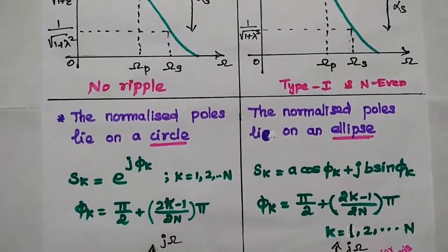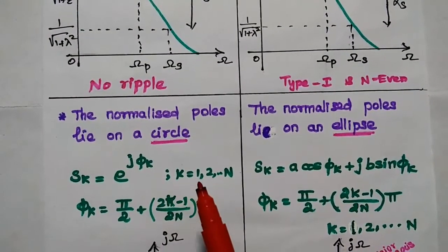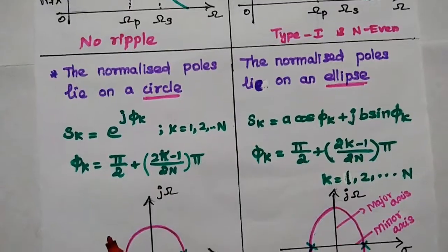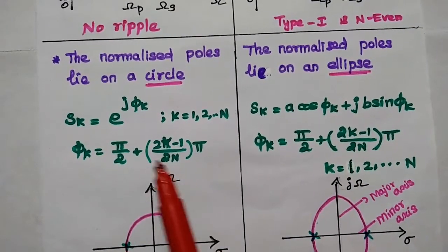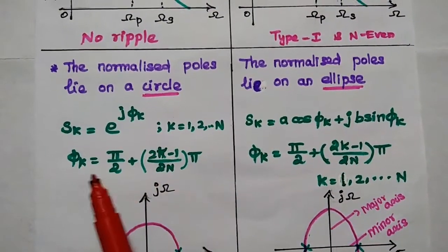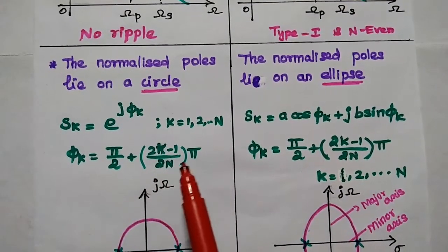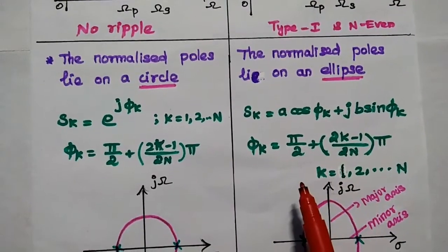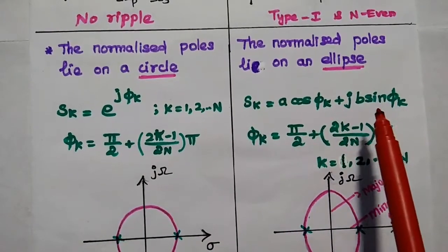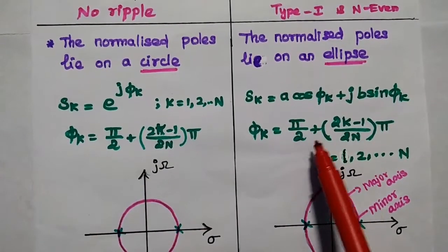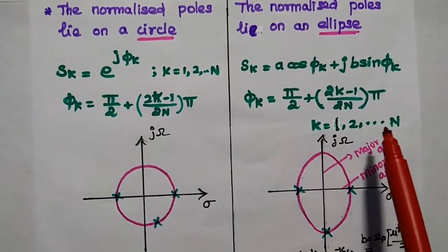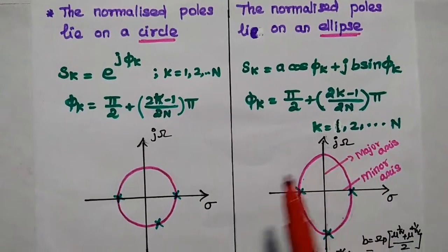The normalized poles of the Butterworth filter lie on a circle, whereas in the Chebyshev filter, the normalized poles lie on an ellipse. The normalized pole locations of the Butterworth filter can be obtained using the formula: S_k = A·cos(φ_k) + j·B·sin(φ_k), where φ_k = π/2 + (2k − 1)/(2N) · π, and k varies from 1 to N, where N is the order of the filter.